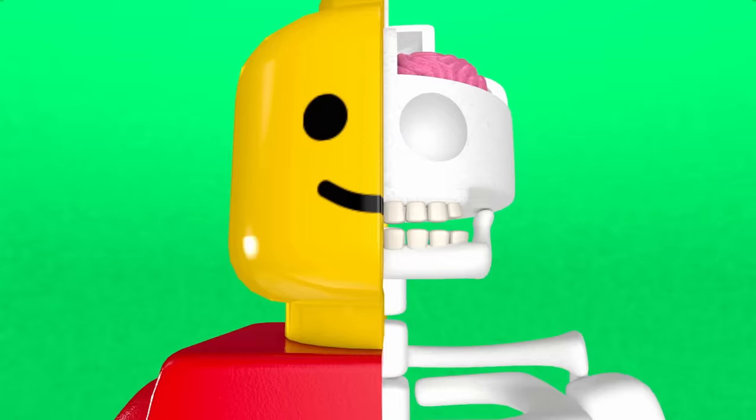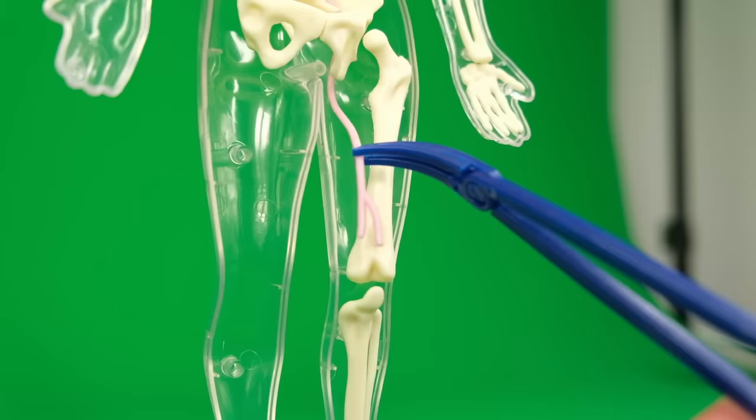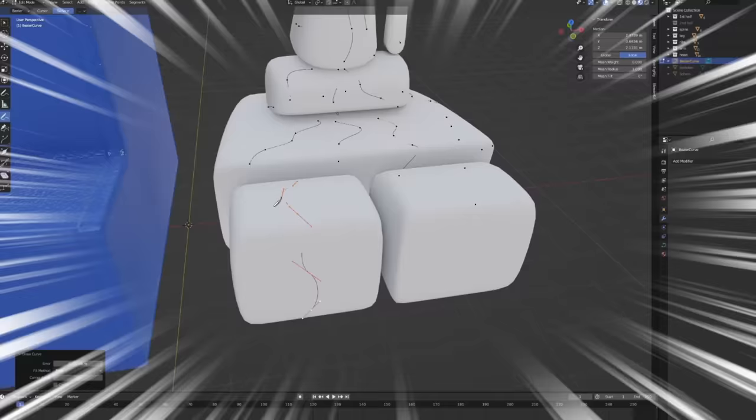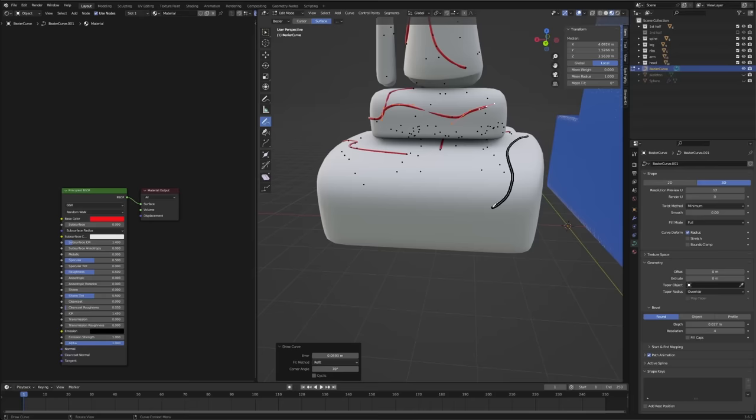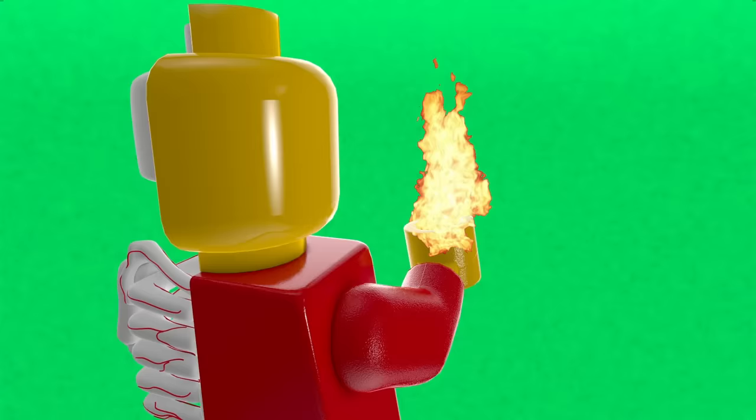But he still can't feel anything. That's because he needs some nerves running through his body. Which are basically like wires that carry signals. And some areas have more of them making them more sensitive. Like the hands or feet. So now the minifig is able to feel pain if he steps on a LEGO brick. Or the warmth of a fire in his hand.